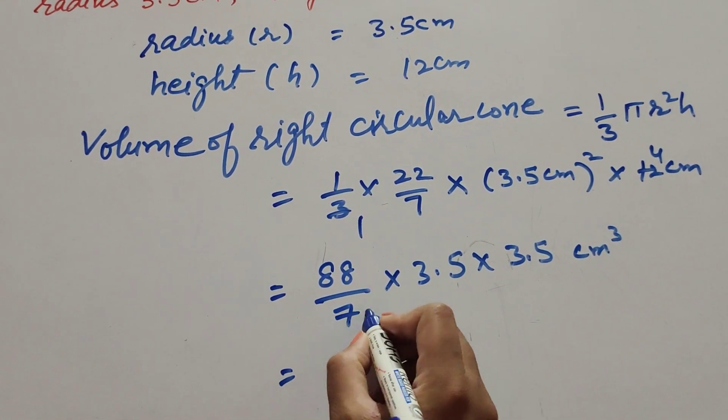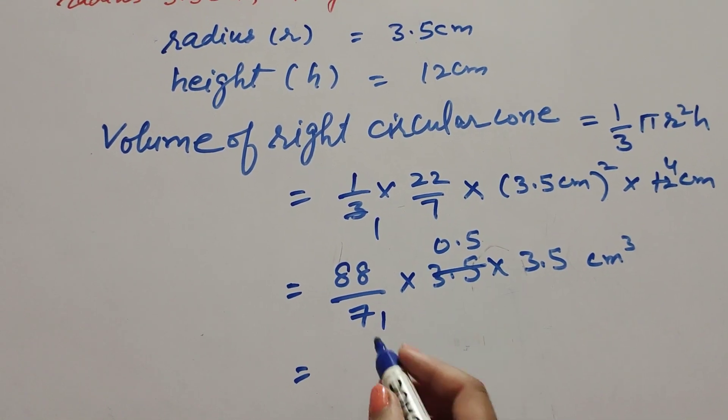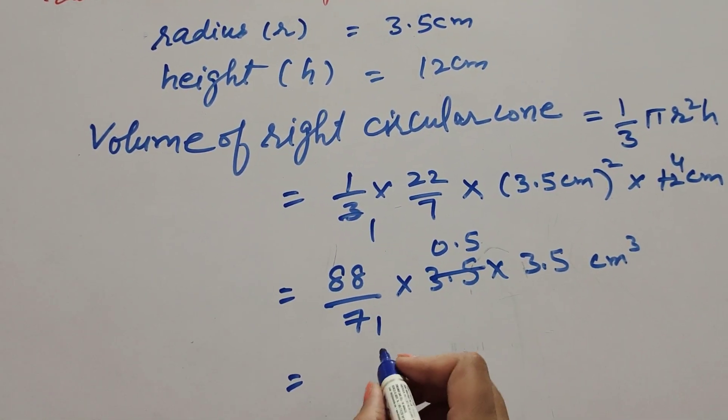Now 44 times 3.5, we get answer 154.0, and we also write it as 154 cm cubed.